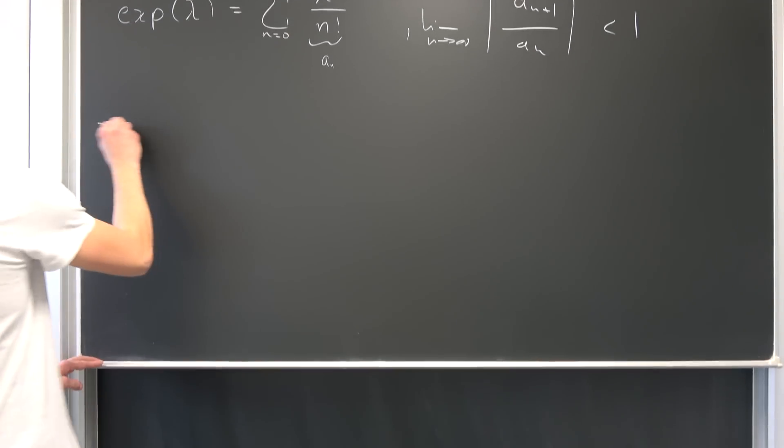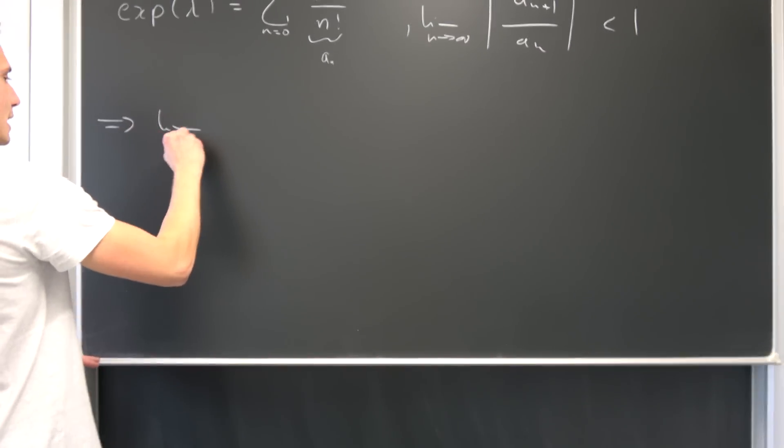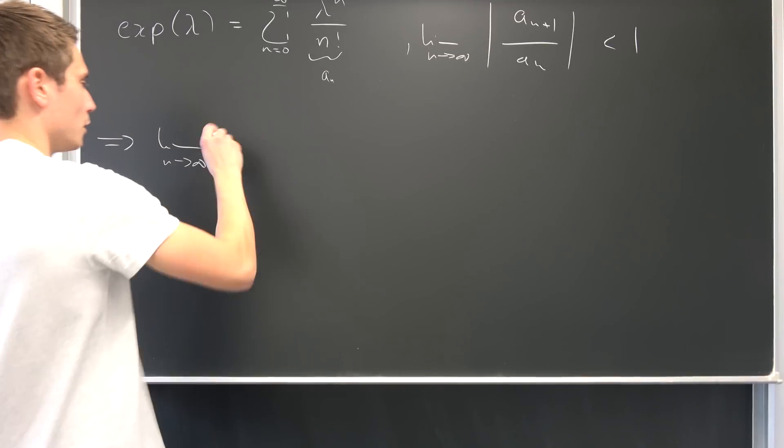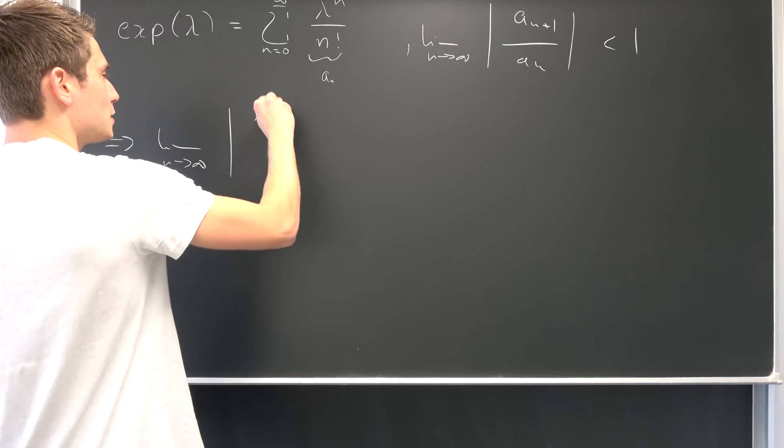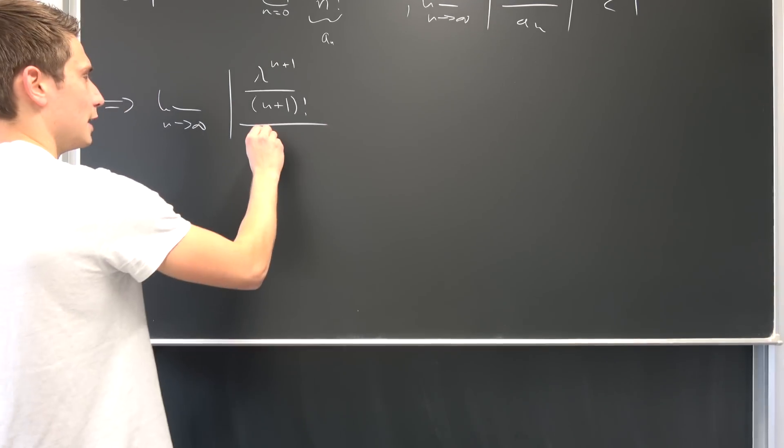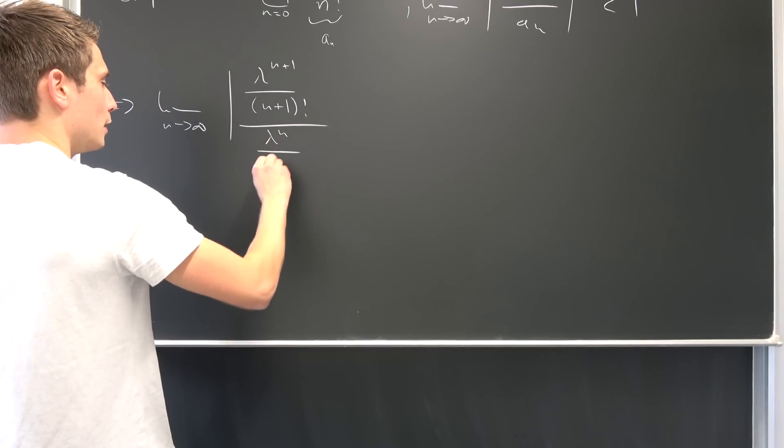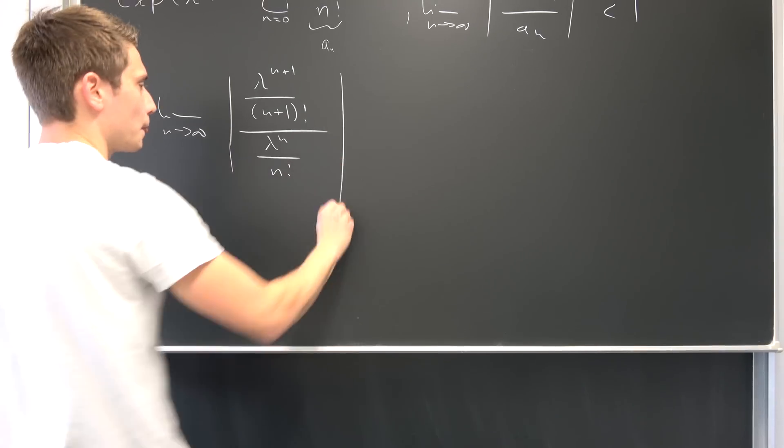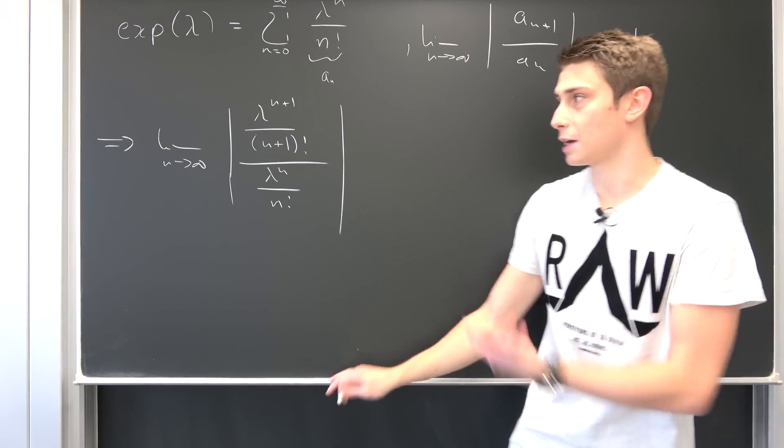So then we have the limit as n approaches infinity of the absolute value of lambda to the (n+1) power over (n+1) factorial, over lambda to the n power over n factorial.